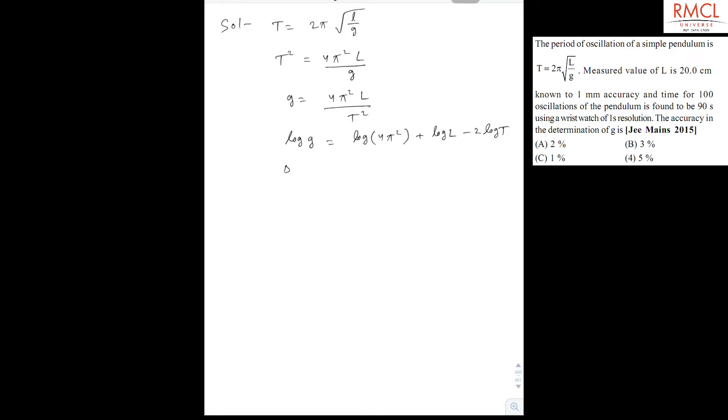So now if we differentiate it, we get Δg/g × 100 = Δl/l × 100 - 2(Δt/t) × 100.